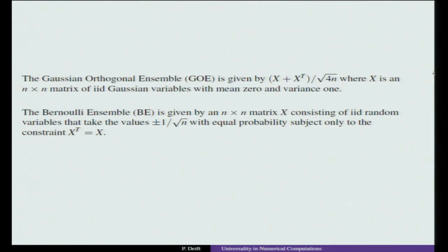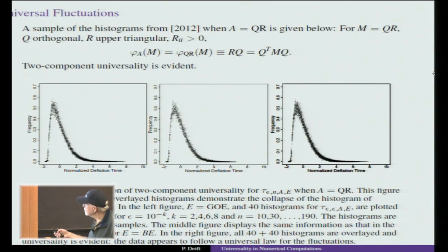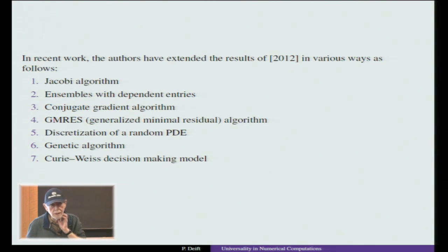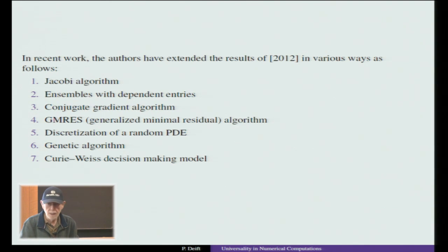At this point we had looked at different algorithms with ensembles of matrices with independent entries. So we began to look at a different algorithm — the Jacobi algorithm — which has a completely different character. We also looked at ensembles with dependent entries, since all previous examples had independent entries. We also considered whether the phenomenon is present in other numerical computations, including the conjugate gradient algorithm for solving linear equations Ax = b and GMRES.